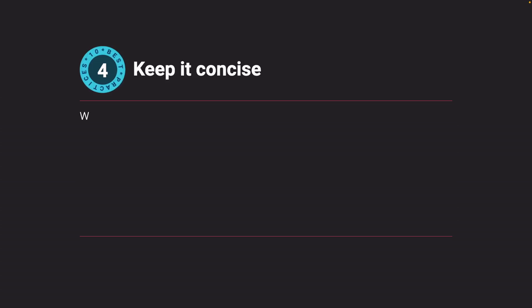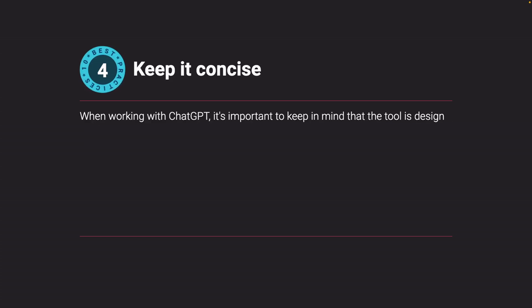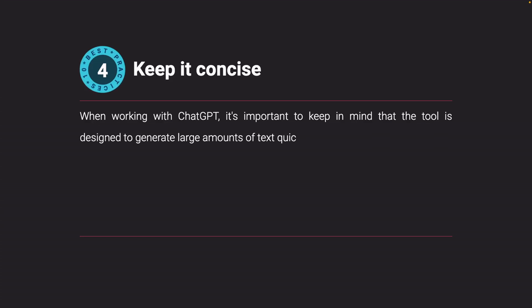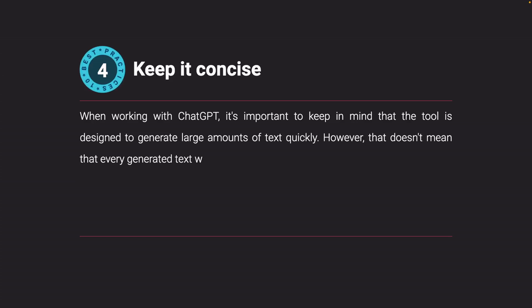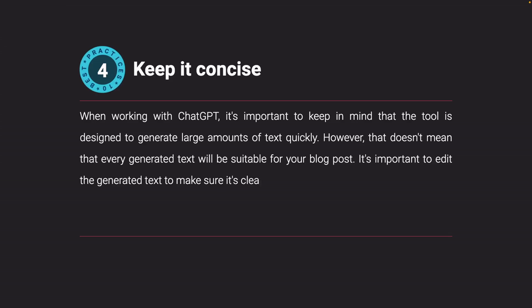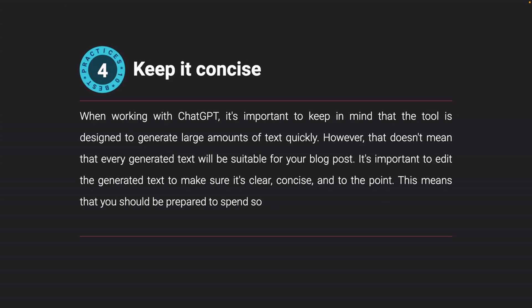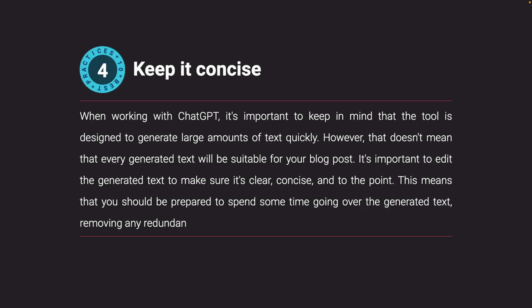Keep it concise. When working with ChatGPT, it's important to keep in mind that the tool is designed to generate large amounts of text quickly. However, that doesn't mean every generated text will be suitable for your blog post. It's important to edit the generated text to make sure it's clear, concise, and to the point. This means being prepared to spend some time going over the generated text and removing any redundant or unnecessary information.